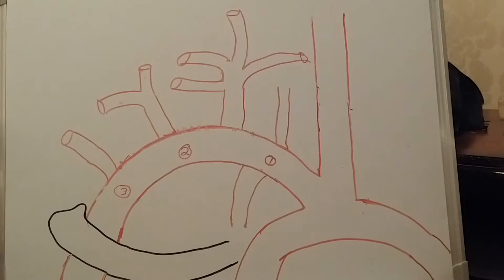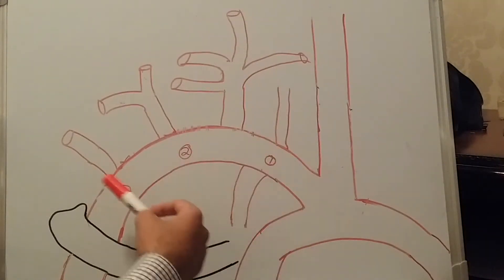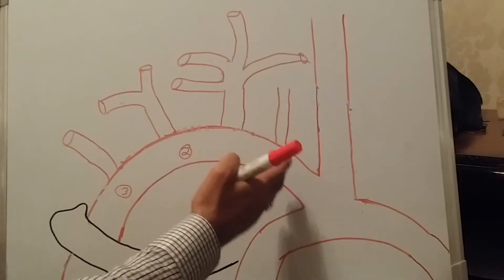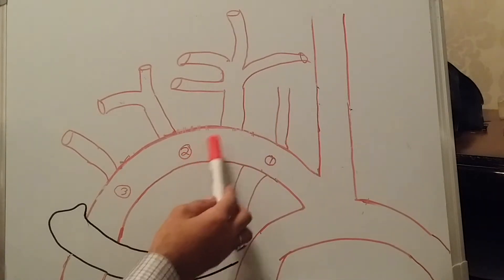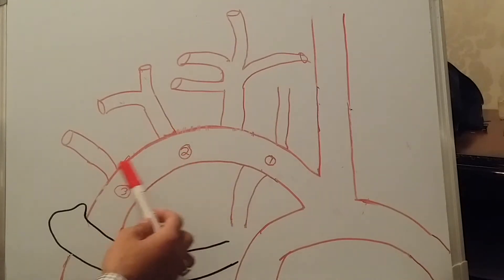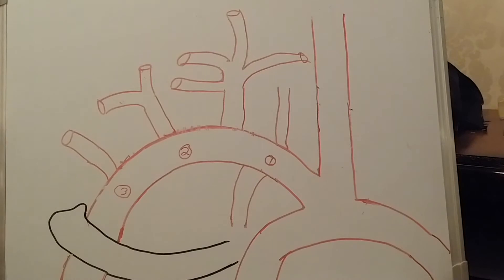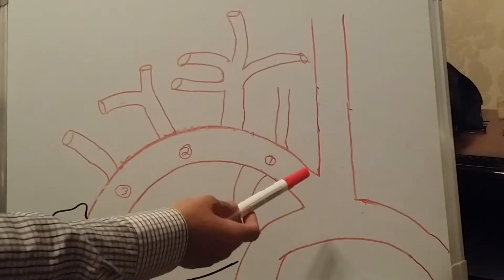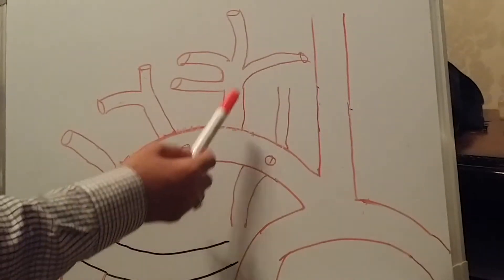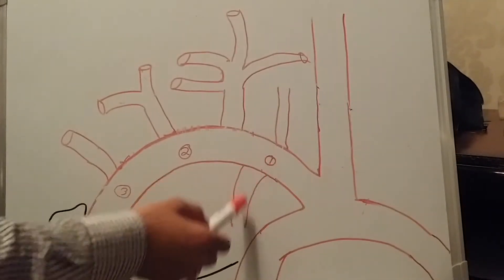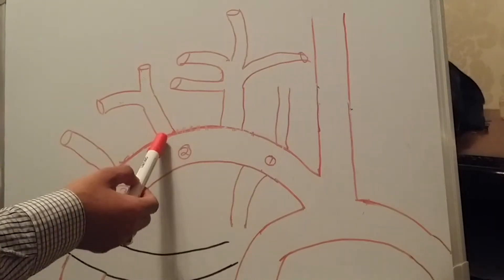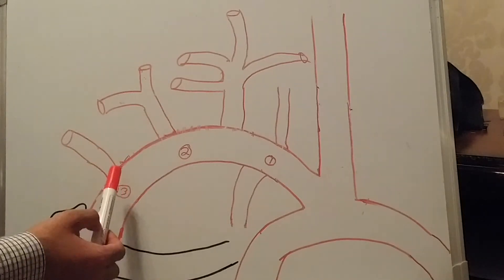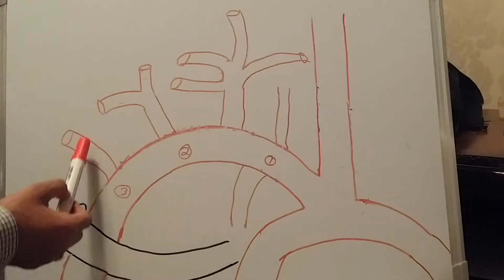So we can see that the subclavian artery is divided into three main parts: before the scalenus muscle, between the scalenus muscles, and after the scalenus muscles. According to their positions, they give different branches. The first portion gives rise to three branches: the vertebral artery, the thyrocervical trunk, and the internal thoracic artery. The second portion gives rise to only one branch — the costocervical trunk — and the third portion also gives rise to only one branch — the dorsal scapular artery.